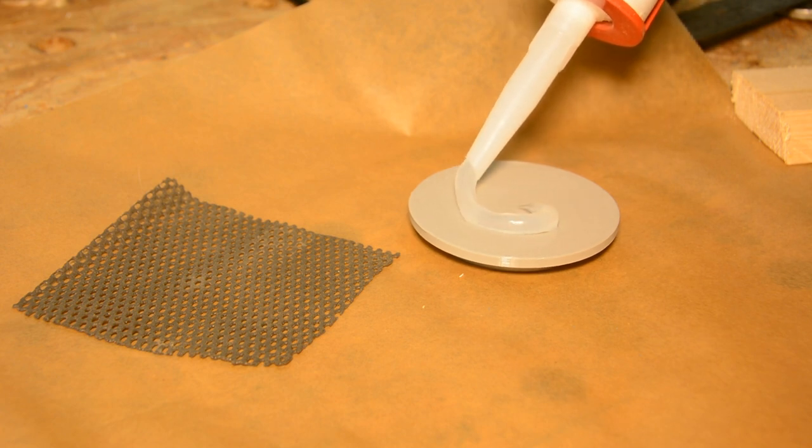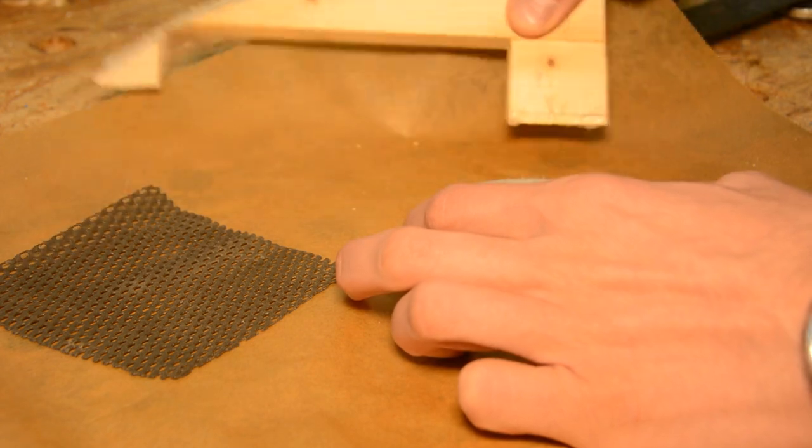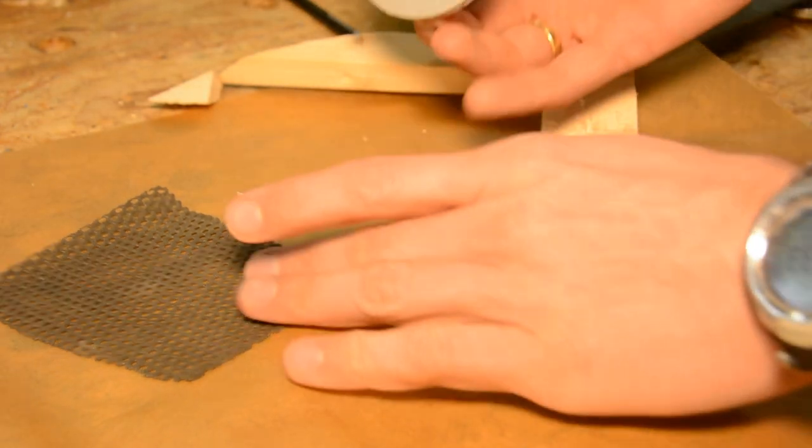We cover the surface of the plate with a generous amount of silicone and then glue a piece of anti-slip rubber on the plate.